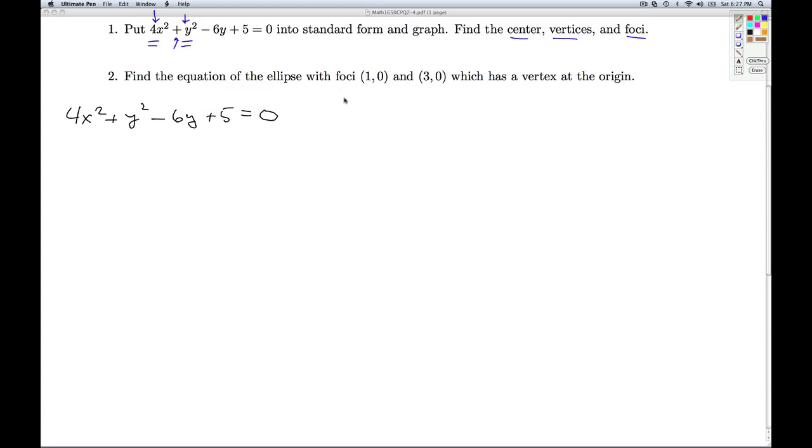I think back to the standard equation of an ellipse: (x - h)² / a² + (y - k)² / b² = 1. And we have to fit this equation to this form. So the first thing we're going to have to do is get all the x's and y's together and toss the 5 on the other side.